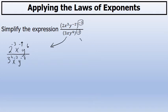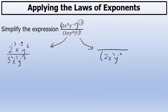Alternatively, because the entire quantity is being raised to the negative third power, you could rewrite the numerator in the denominator unchanged — 2x to the third y to the negative two raised to the third power — and you could write the original denominator unchanged.